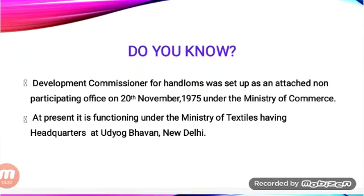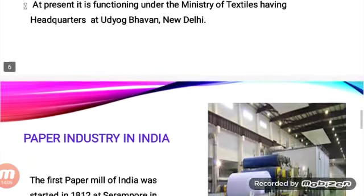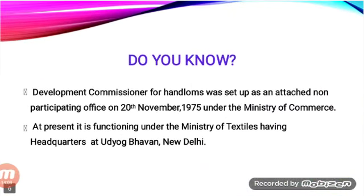The Development Commissioner for Handlooms was set up as an attached non-participating office on 20th November 1975 under the Ministry of Commerce, and is now functioning under the Ministry of Textiles with headquarters at Udyog Bhavan, New Delhi. Next, we will study the sugar industry, which is considered a raw material-oriented industry as it is produced from sugarcane. Sugarcane must be crushed within 24 hours of harvest.